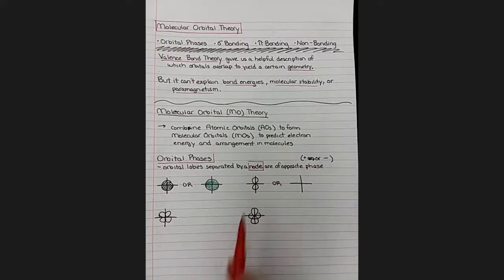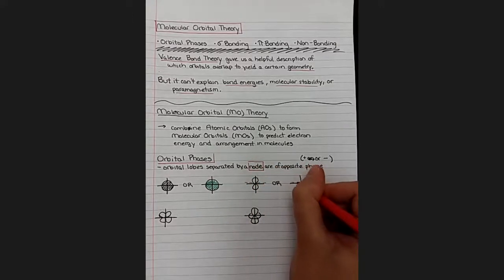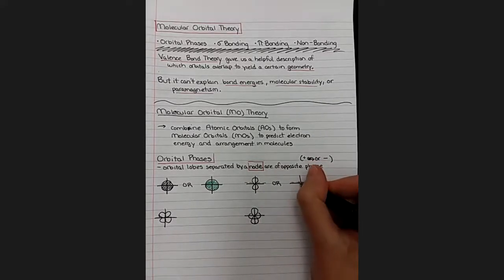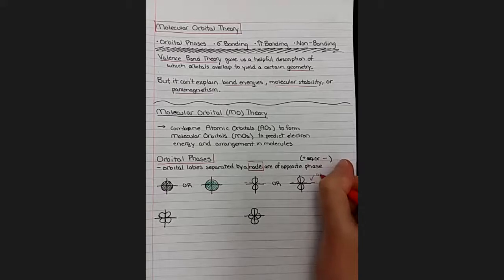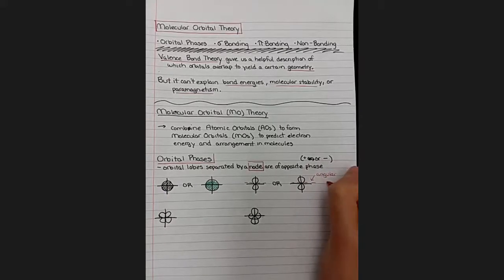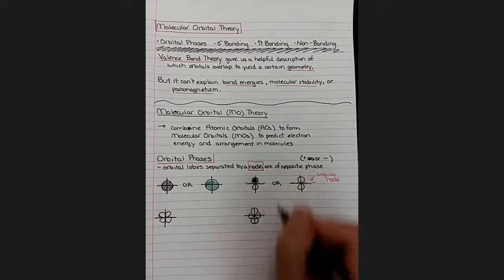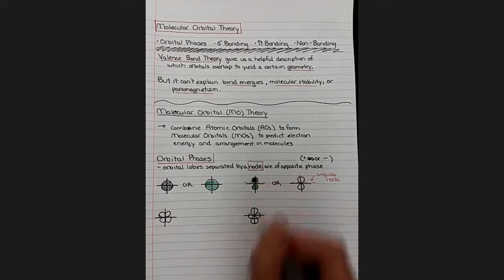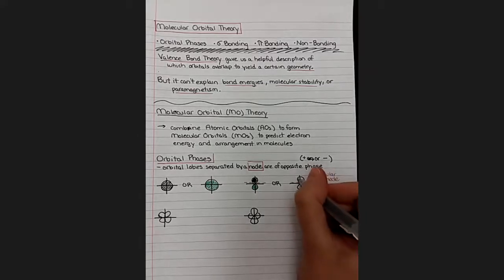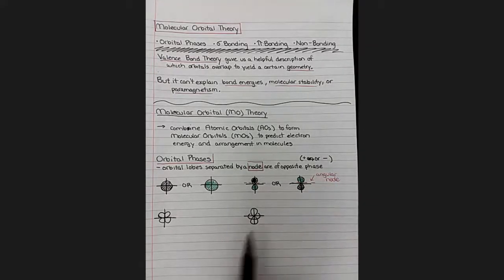When we draw a p orbital, we know that p orbitals have an angular node through the middle, through that nucleus. So p orbitals have an angular node through the middle, and so when we pass through that node, we need to change phases. So it doesn't matter which phase we pick. We just need to make sure we change it. So if I pick the black phase for the top orbital, as I pass through this angular node, I now need to switch to the other phase for the second lobe. Or I could do it the opposite. I could put the green phase on the top, pass through a node, and switch to the black phase. So it doesn't matter which one goes on top, as long as you switch as you go over the node.